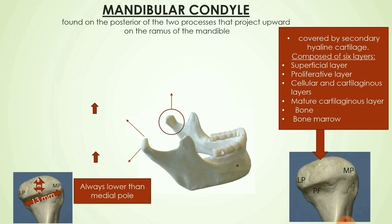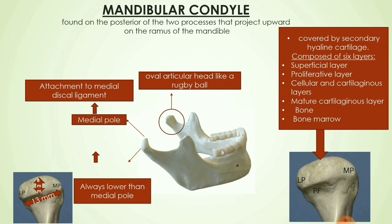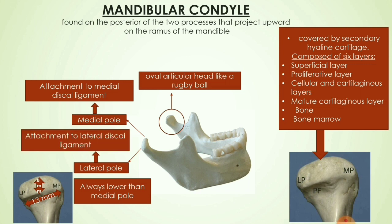The mandibular condyle is found on the posterior of the two processes that project upward on the ramus of the mandible. It is the articular head, shaped like a rugby ball. It has a medial pole which provides attachment to the medial discal ligament of the TMJ, and a lateral pole which attaches to the lateral discal ligament. The lateral pole is always lower than the medial pole. Mediolaterally the condyle is around 13 mm, whereas anteroposteriorly it is around 8 mm.